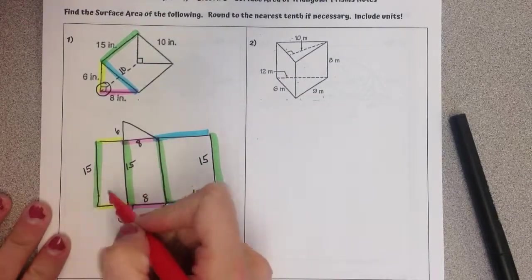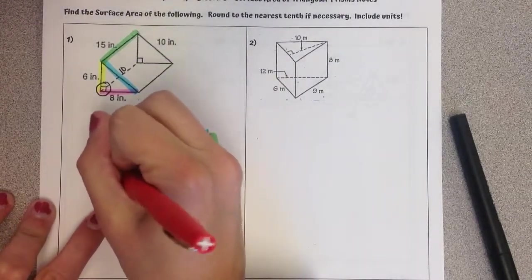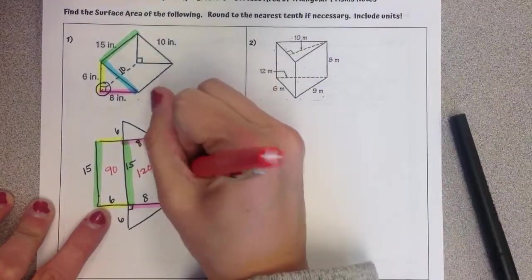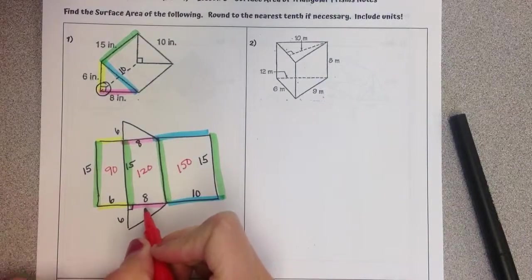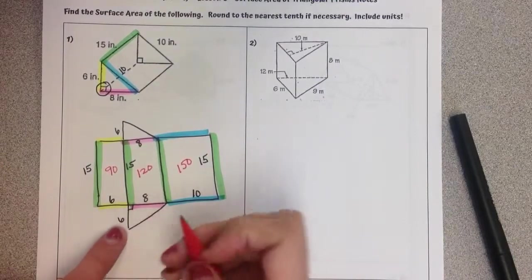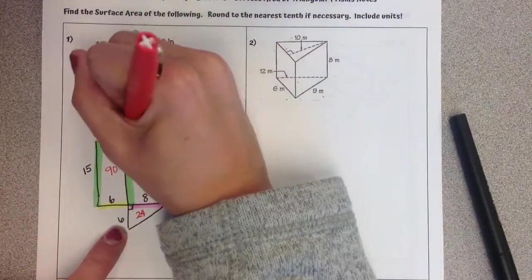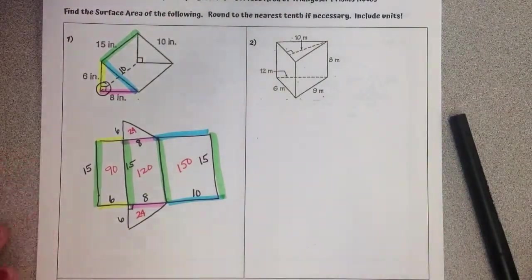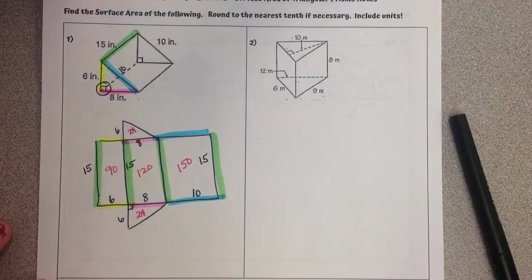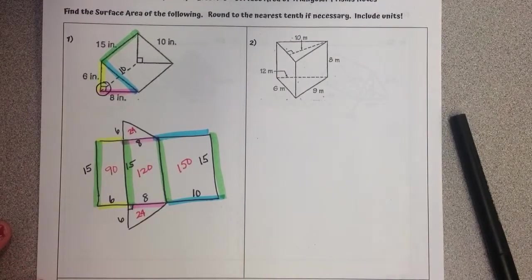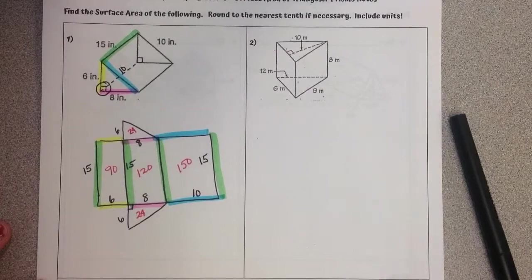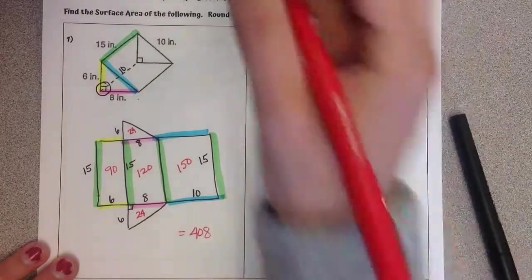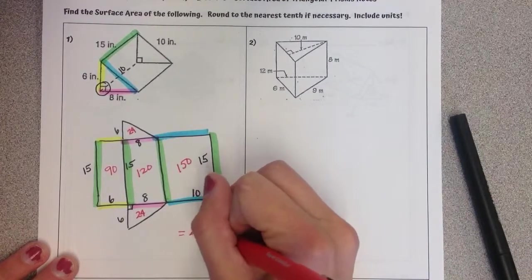So we can do here 15 times 6 is 90. 15 times 8 is 120. 10 times 15 is 150. The area of our triangle, 8 times 6 divided by 2 is 24. And it's going to be the same on the top there. So now we're just going to add those all together. 150 plus 120 plus 90 plus 24 and 24. Gives us a total surface area of 408 inches squared.